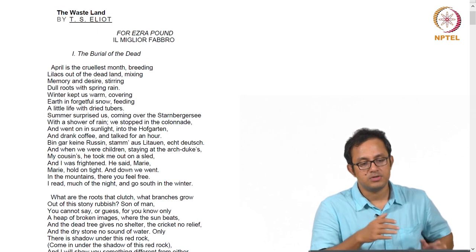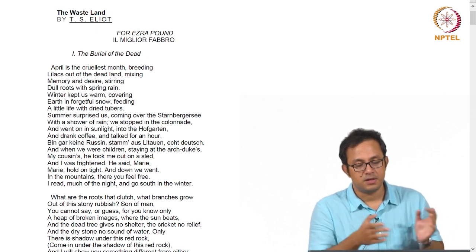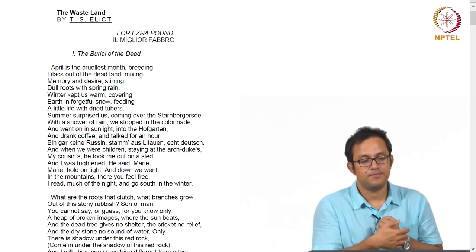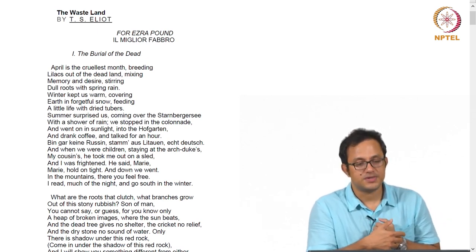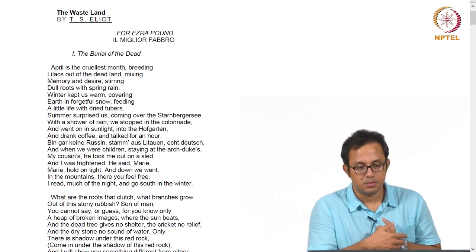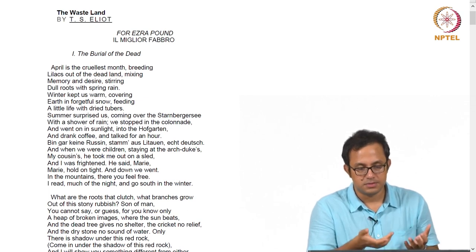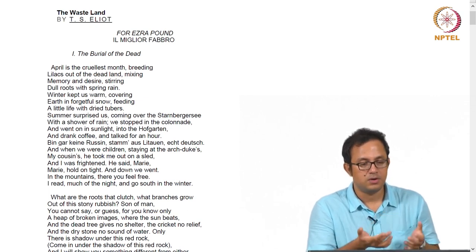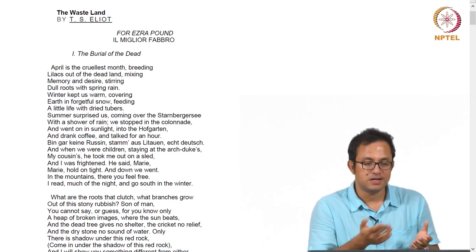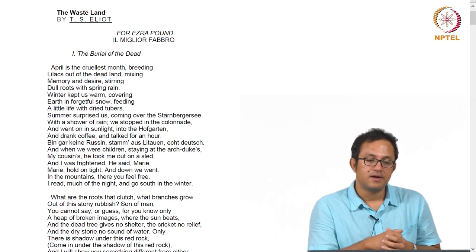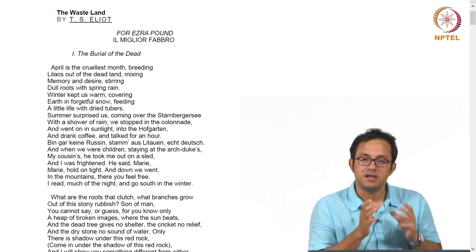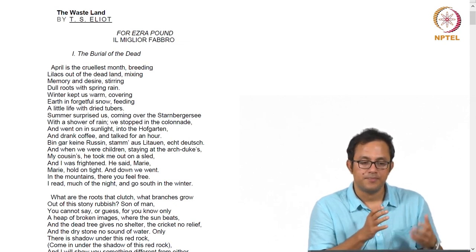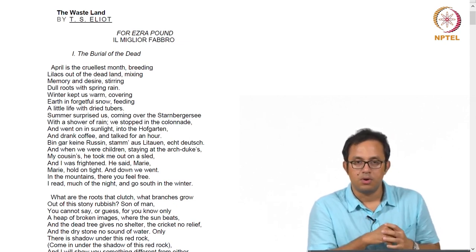The reason why we come into Wasteland after the early poetry of Eliot is to find how some of the characteristics of that early poetry — like The Love Song of J. Alfred Prufrock and Preludes, the two poems you have done — we find some of the stylistic elements get carried over into this particular poem as well.